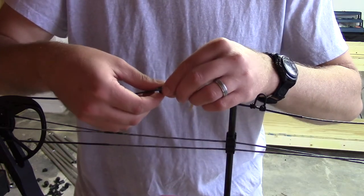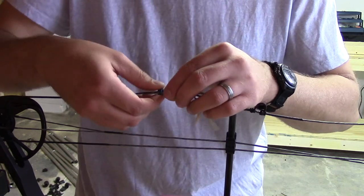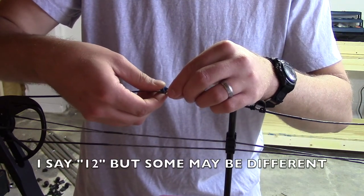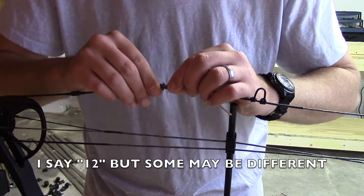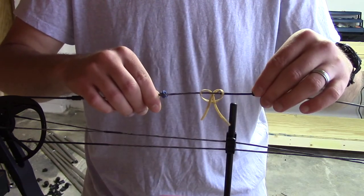So if you have a two color string, the colors are even, so if you have black and green, there will be 12 of black and 12 of green, and everything will be good. You won't have to worry about this. If you have a solid color string and you don't get them even, you'll have some interesting peep rotation issues.